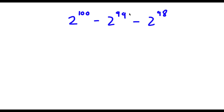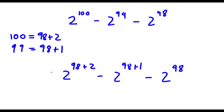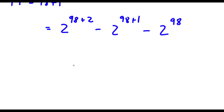Alright, so I have 2 to the power of 100 minus 2 to the power of 99 minus 2 to the power of 98. First, 100 is the same thing as 98 plus 2; 99 is the same thing as 98 plus 1; and 98 is the same thing as 98. So now if I replace these in, I get 2 to the power of 98 plus 2, minus 2 to the power of 98 plus 1, minus 2 to the power of 98.